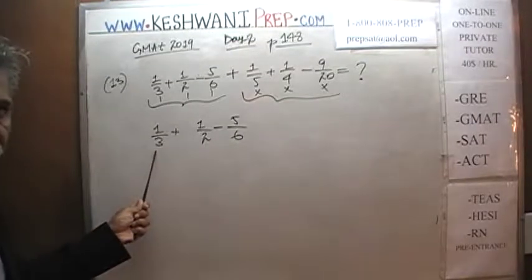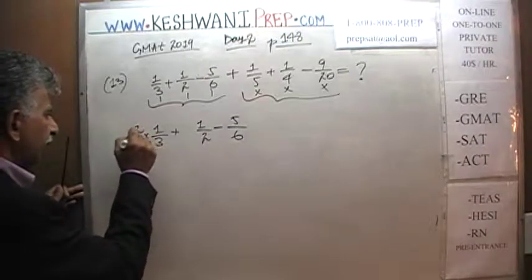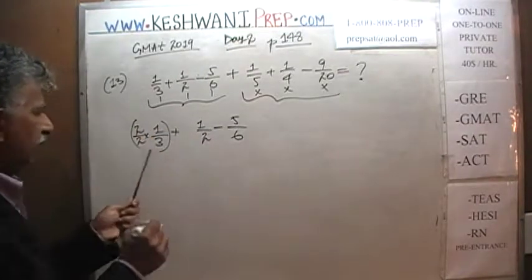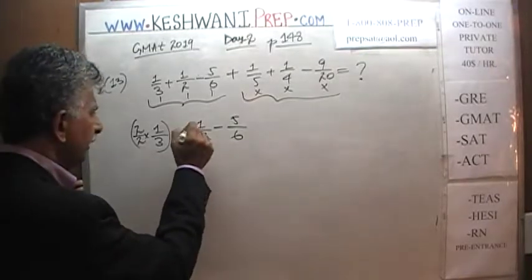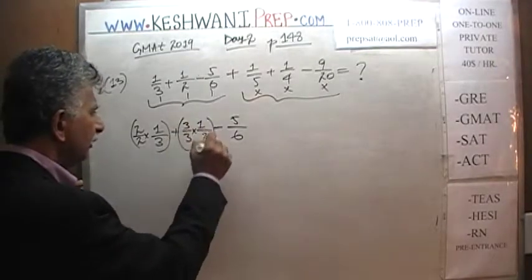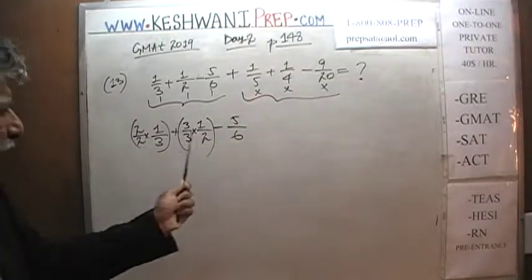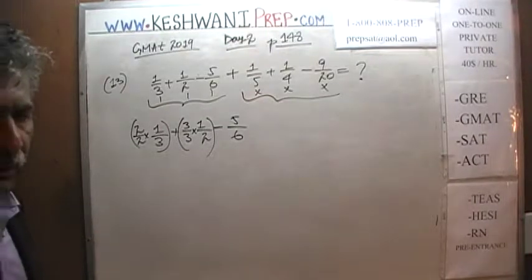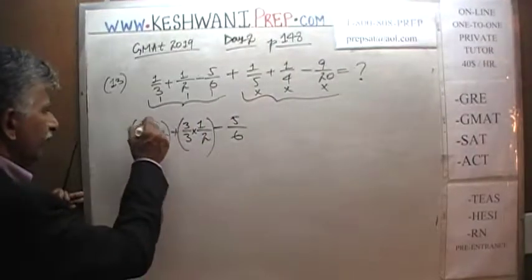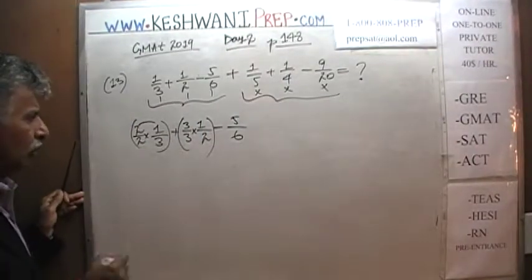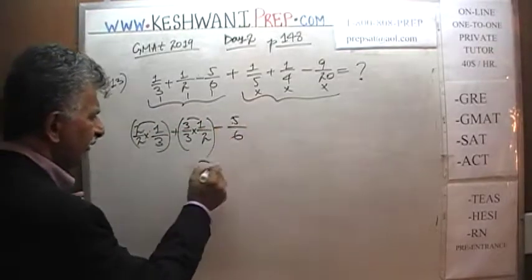How do we make this into a denominator of six? We have a denominator of three — take that first fraction and multiply top and bottom by two, so now we have a denominator of six. For the second fraction, multiply top and bottom by three. Now all three quantities have a common denominator of six. On the top we have two times one which is two, three times one is three, so we have two plus three minus five — it's a big fat zero.